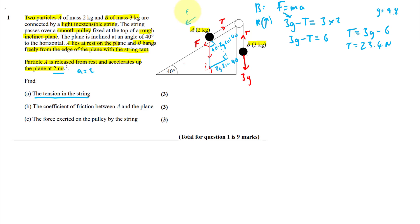We could work out the tension by resolving parallel to the plane, but that would require knowing friction first. Since we don't have the coefficient of friction yet — that comes in part (b) — we can't resolve that way at this stage. So let's move on to part (b).